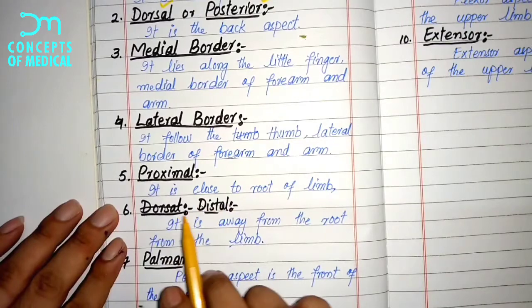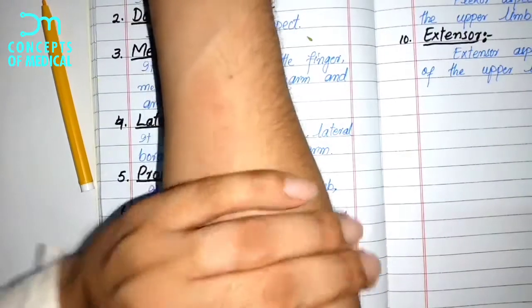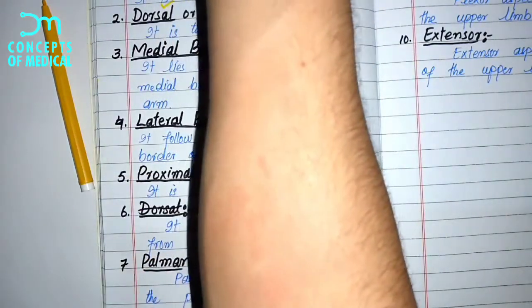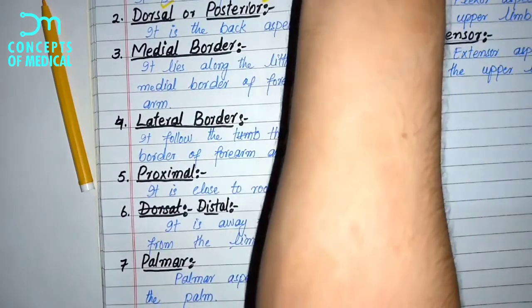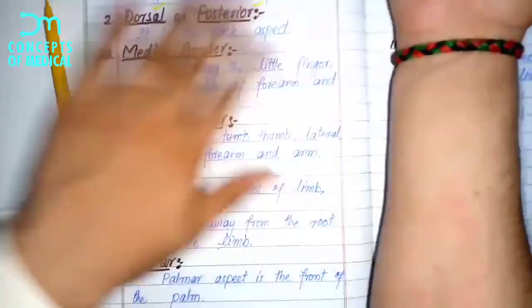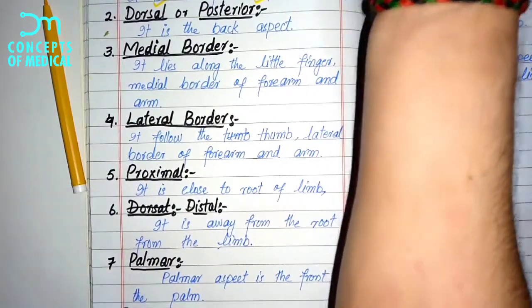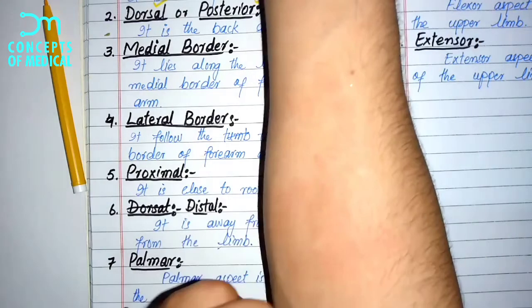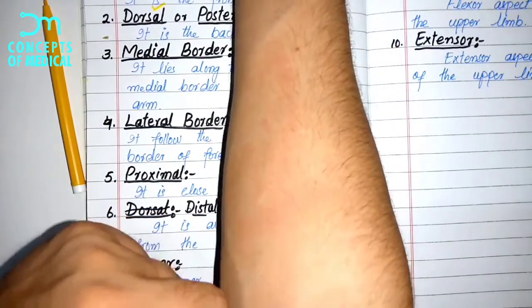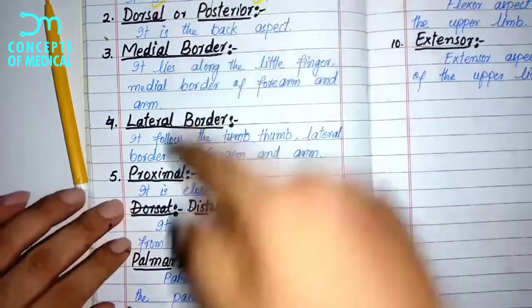The fifth term is proximal. It means close to the root of the limb. For example, with the radius and ulna bones, their attachment root is the humerus. The part of any structure where it is attached to the root uses the proximal term. We say the proximal end of the radius bone makes the elbow joint with the humerus.